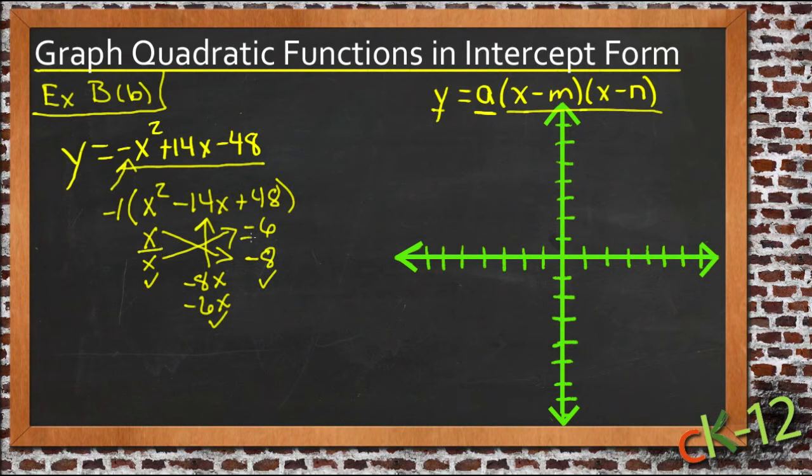So we have x minus 6 times x minus 8, which means our function now looks like y equals negative 1 times x minus 6 times x minus 8.